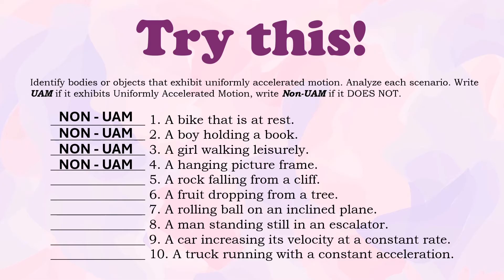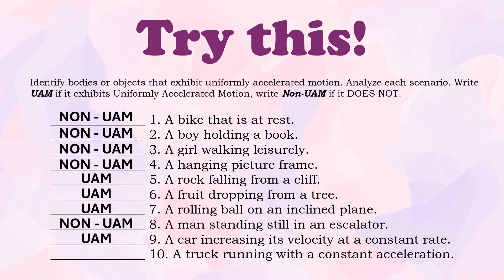Number four: a hanging picture frame — Non-UAM. Number five: a rock falling from a cliff — this is UAM, because a falling rock experiences accelerated motion due to gravity. Number six: a fruit dropping from a tree — also UAM, because the fruit experiences accelerated motion due to gravity. Number seven: a rolling ball on an inclined plane — also UAM. Number eight: a man standing still on an escalator — Non-UAM.